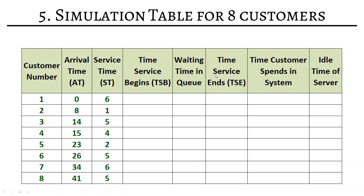All columns are fairly self-explanatory. Imagine you go to a checkout counter — the time you arrive is your arrival time. If there's a long queue, the time you wait is the waiting time in queue. The moment the cashier starts serving you is when the service begins. The duration of service is the service time. When the cashier finishes and gives you the final bill, that is when the service ends. The total time from arrival to service end is the time you spent in the system. The idle time of the server indicates whether the cashier was free or not.